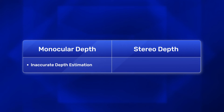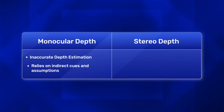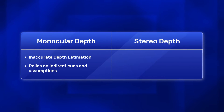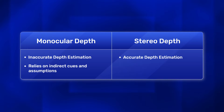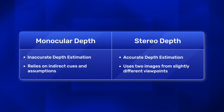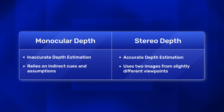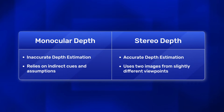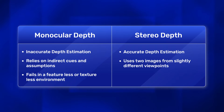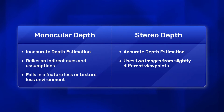Monocular vision struggles with accurate depth estimation as it relies on indirect cues and assumptions about the scene. Stereo vision, however, creates accurate depth maps as it uses two images from slightly different viewpoints. Thus, monocular vision faces a disadvantage in featureless or textureless environments, whereas stereo vision fails during occlusions.